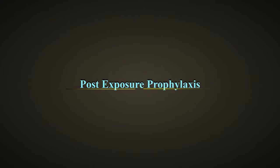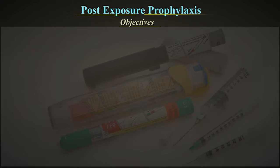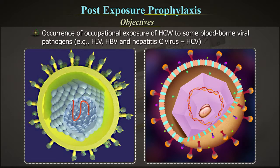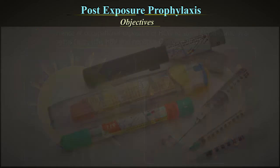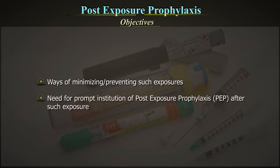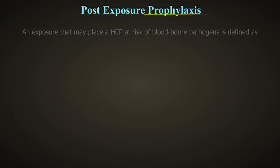Post-Exposure Prophylaxis Objectives. This video covers the occurrence of occupational exposure of healthcare workers to blood-borne viral pathogens, for example HIV, Hepatitis B virus and Hepatitis C virus, ways of minimising or preventing such exposures, and the need for prompt institution of post-exposure prophylaxis or PEP after such exposure.